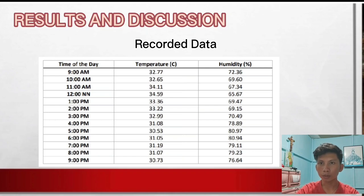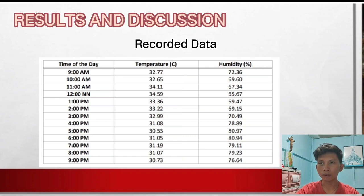At 9 p.m., the temperature is 30.73°C and the humidity is 76.64%. It shows that the maximum temperature is 34.59°C with 65.67% relative humidity at 12 noon, and the minimum temperature is 30.53°C with 80.97% relative humidity. It can also be observed that as the temperature increases, the relative humidity decreases and vice versa.